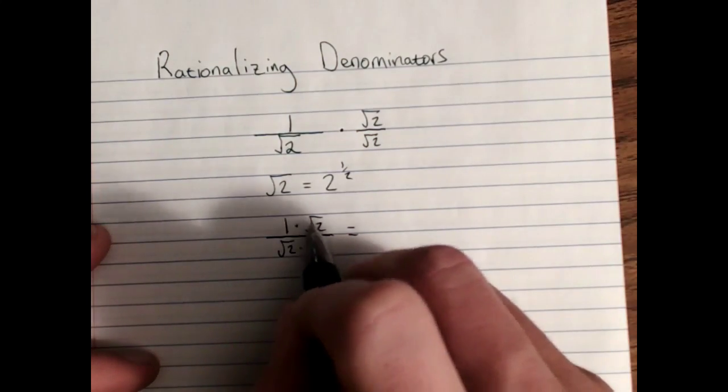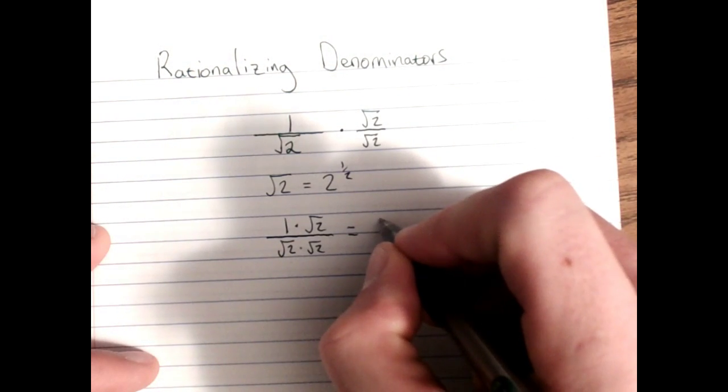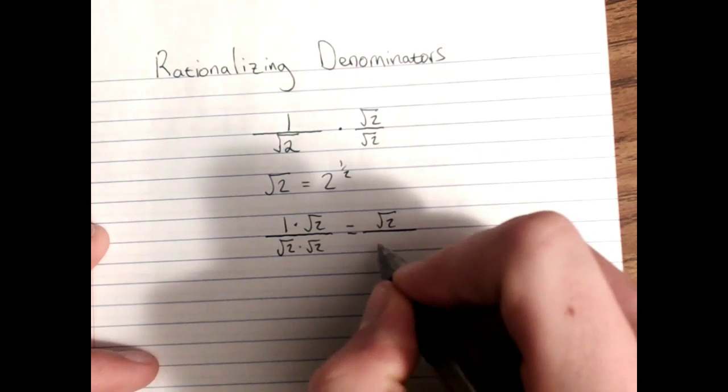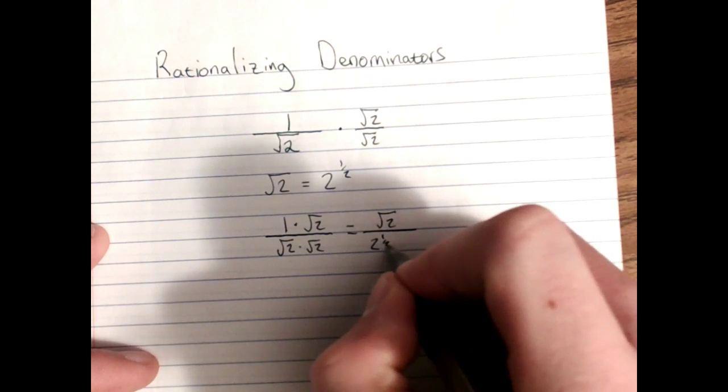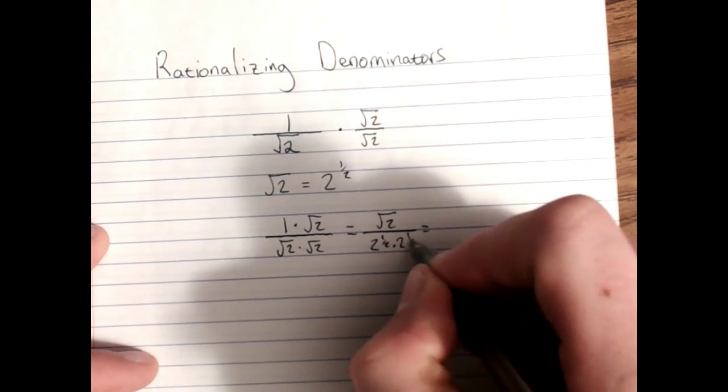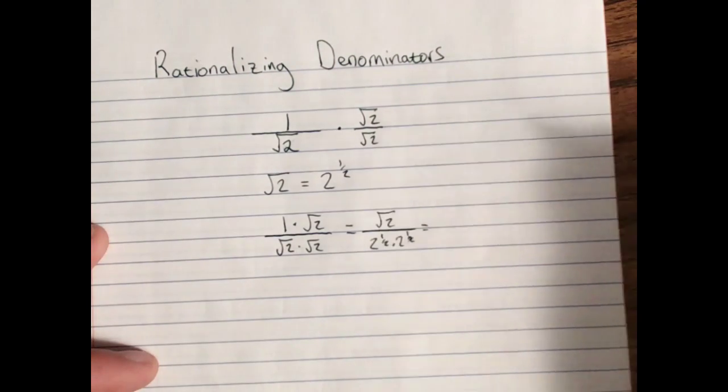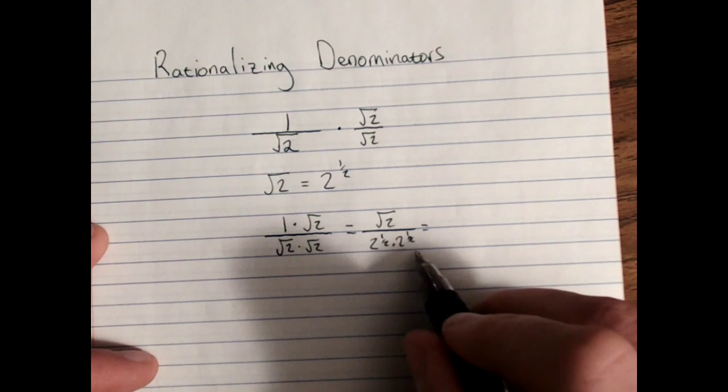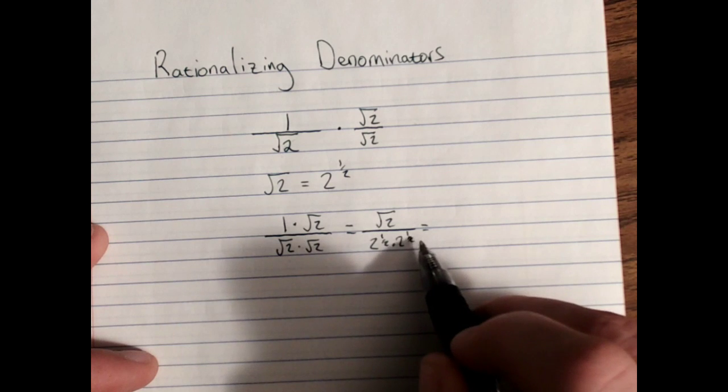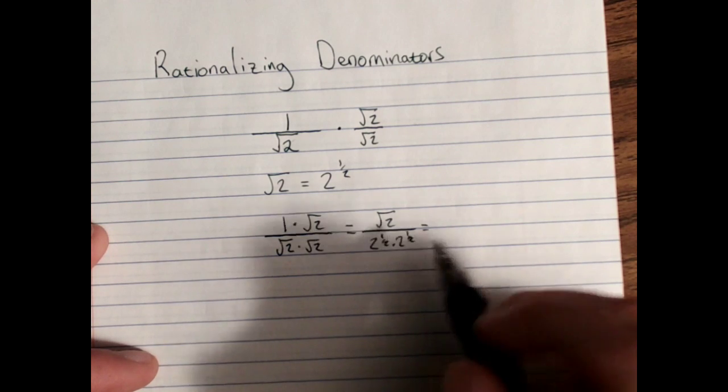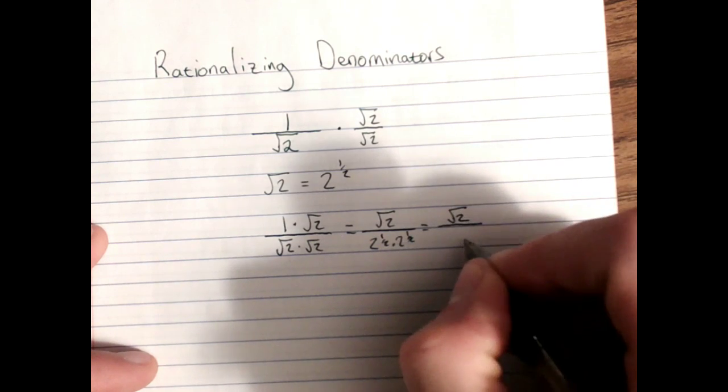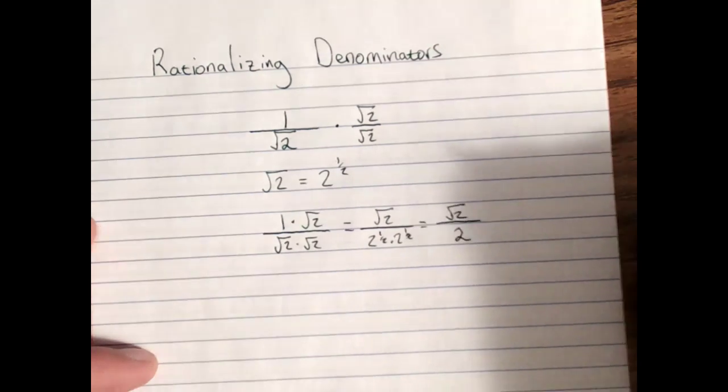Well, anything times 1 is itself, so let's just leave the root 2 alone there on the top. But here I have 2 to the 1 half power times 2 to the 1 half power, and our power rule tells us that when we have the same base being multiplied together, we can add the exponents. 1 half plus 1 half is just 2. So I end up with the square root of 2 over 2.